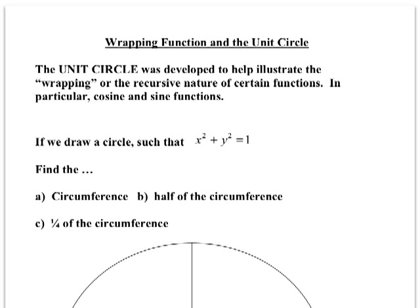Today we're going to talk about the wrapping function in the unit circle. The unit circle follows this equation: x squared plus y squared equals 1, meaning that my radius is 1 and the center is at (0, 0).